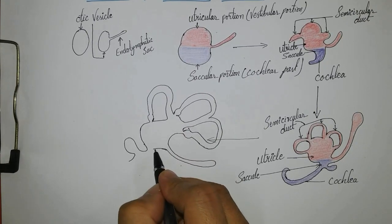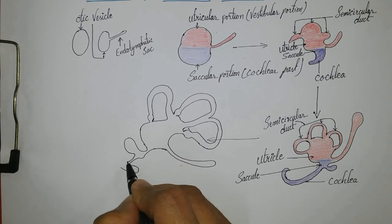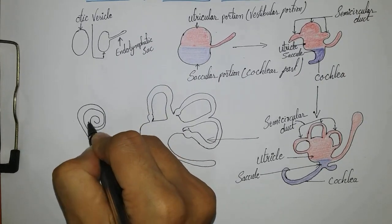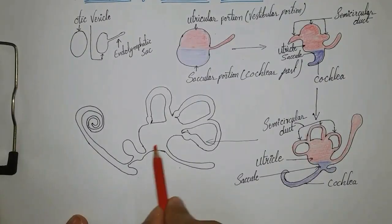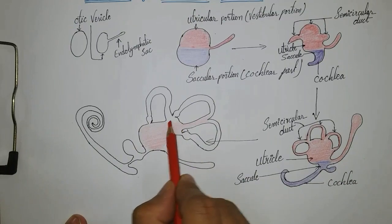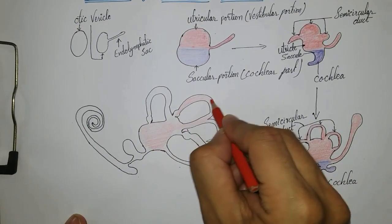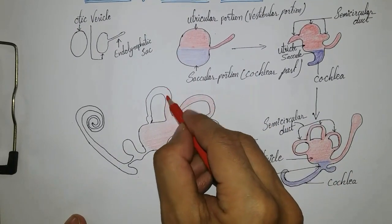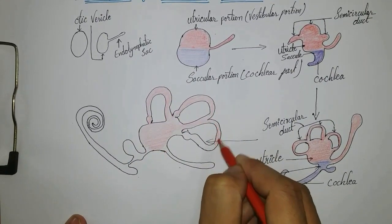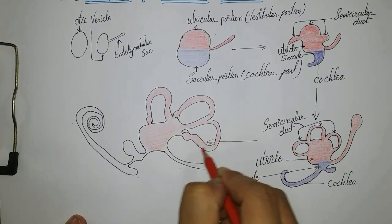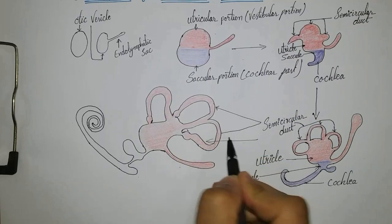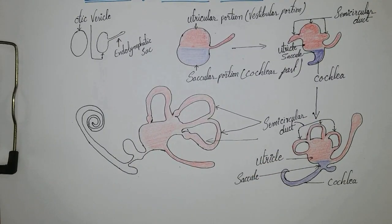During the sixth week of intrauterine life, the saccule forms a tubular diverticulum called the cochlear duct, which grows in a spiral fashion until it completes two and a half turns. It then connects with the saccule via a narrow channel forming the ductus reuniens. The mesenchyme condenses around the membranous labyrinth and is converted into cartilage to form the otic capsule.